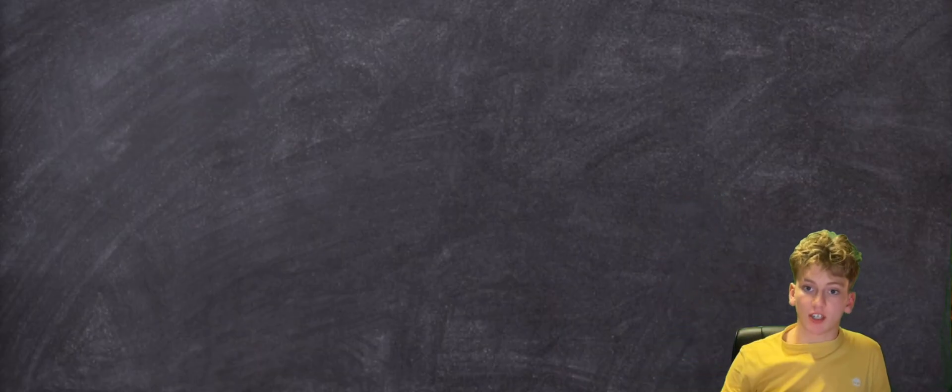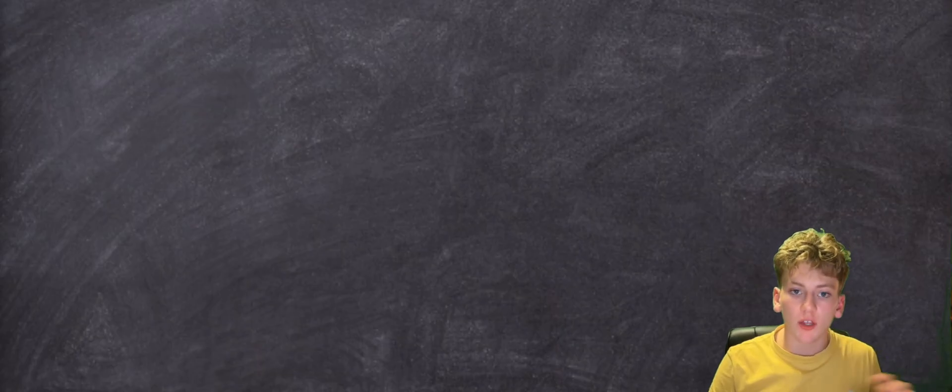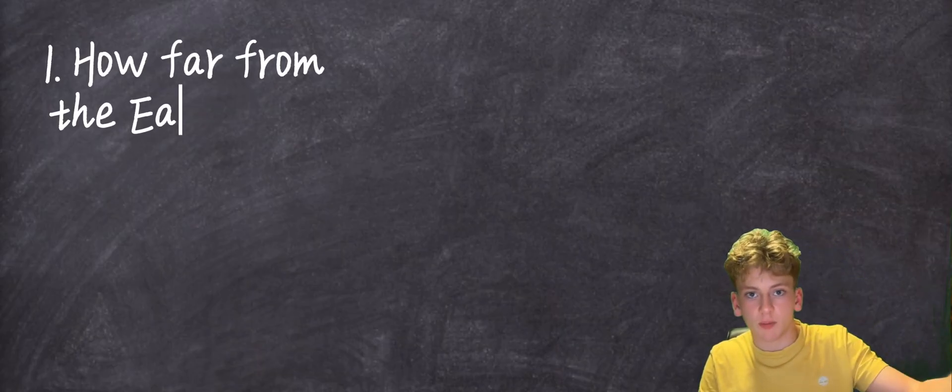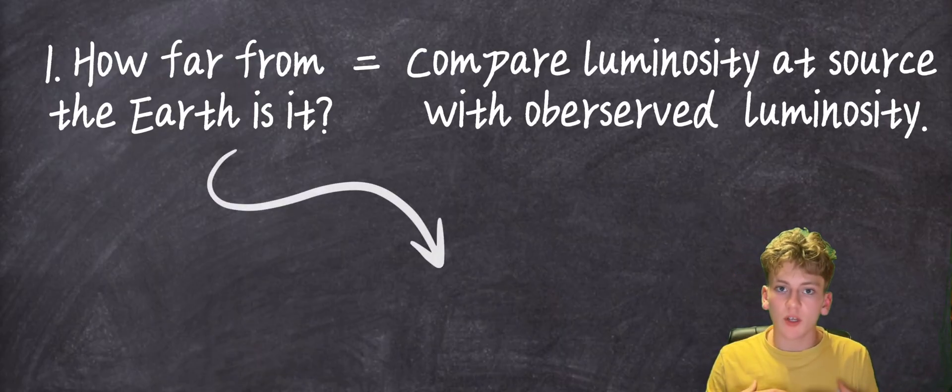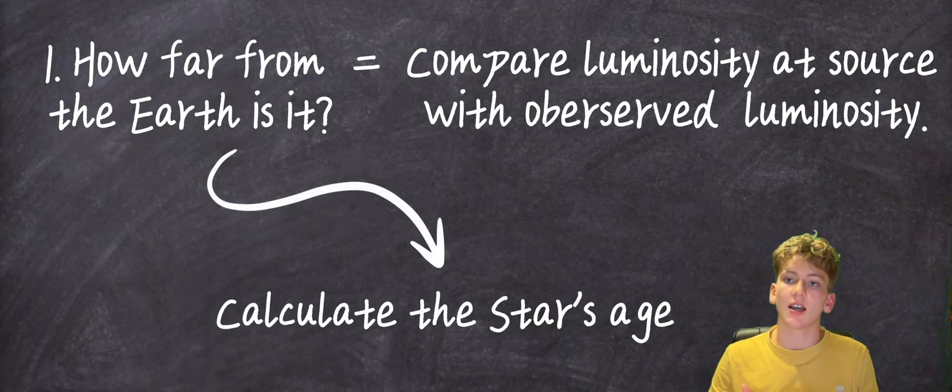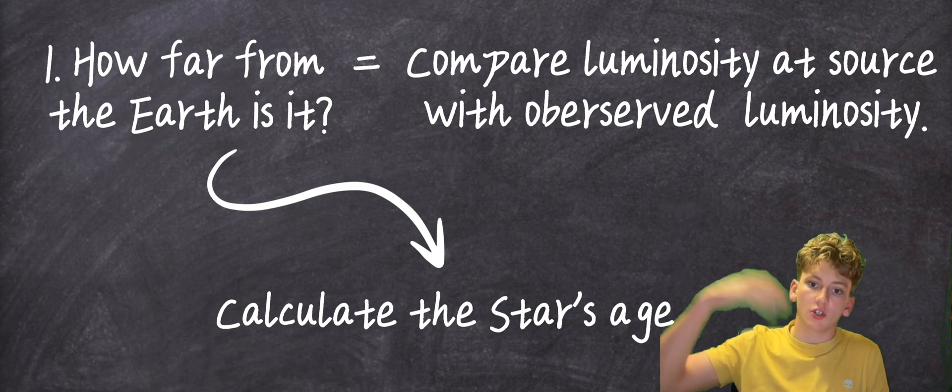By comparing how brightly the explosion appeared in our skies with how brightly the Type Ia explosion should shine at source, the astronomers could determine how far from the Earth the explosion took place. This allowed them to calculate the star's age, because the light we see here on Earth has to take some time to travel from the explosion to our eyes.